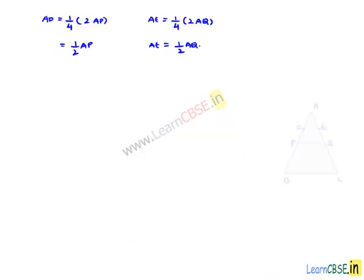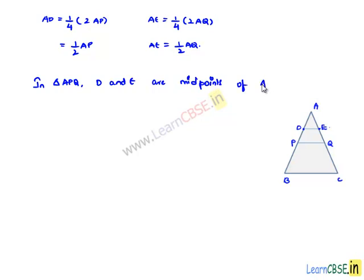We can say that in triangle APQ, D and E are midpoints of AP and AQ respectively.